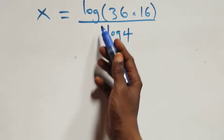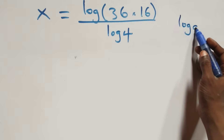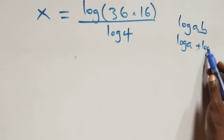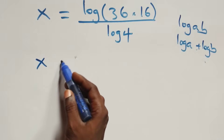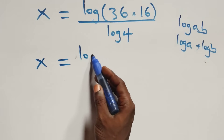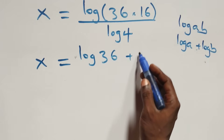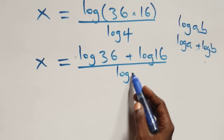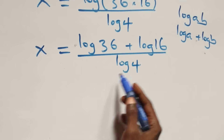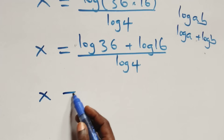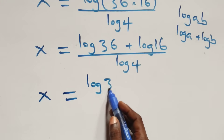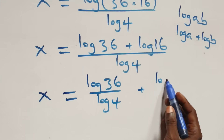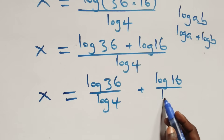This follows from the law of logarithms. The next step: log(36×16) over log 4 expands so that x equals log 36 plus log 16, all over log 4. Then we separate this into two fractions: x equals log 36 over log 4 plus log 16 over log 4.